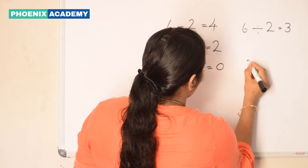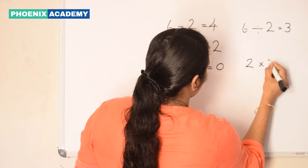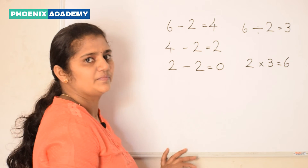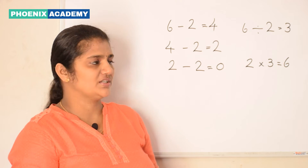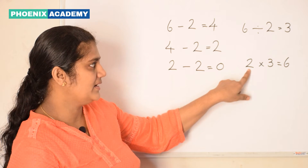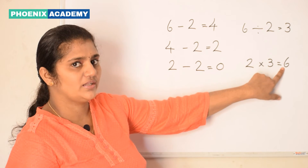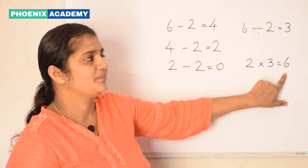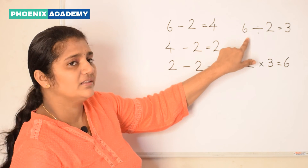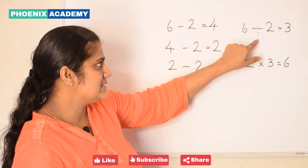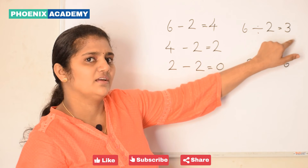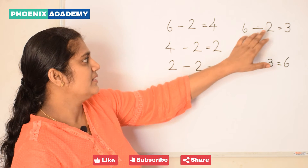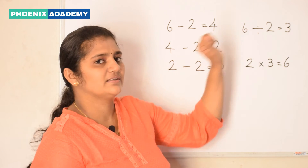So I can say 2 into 3 equal to 6. In multiplication, equal groups are added to get the total number — 2 is added 3 times to get 6. But in division, the total number is divided to get the number each person gets: 6 divided by 2 to reach 3.